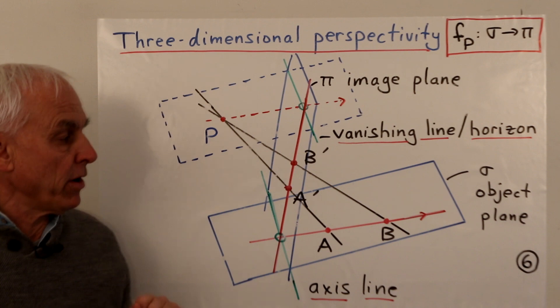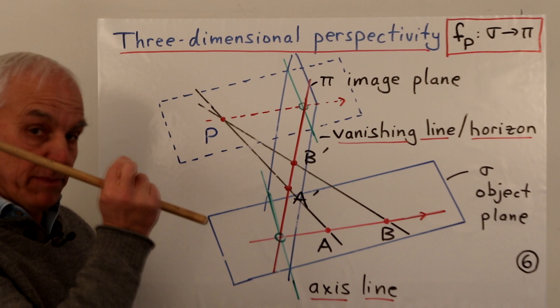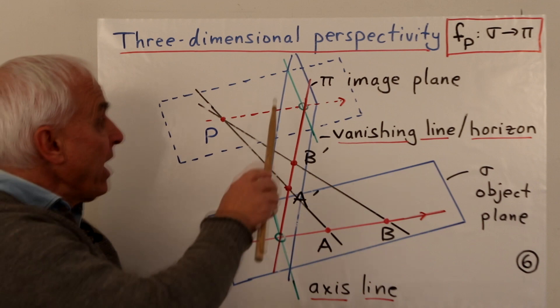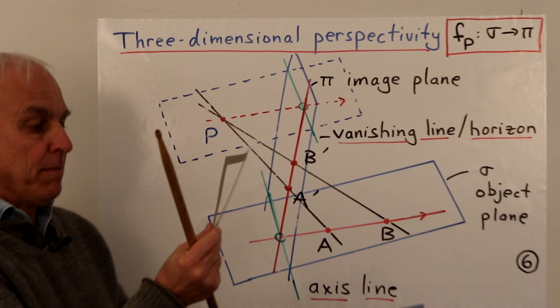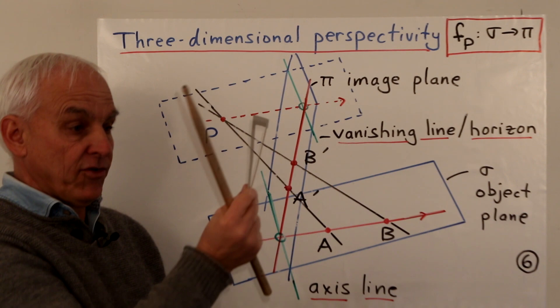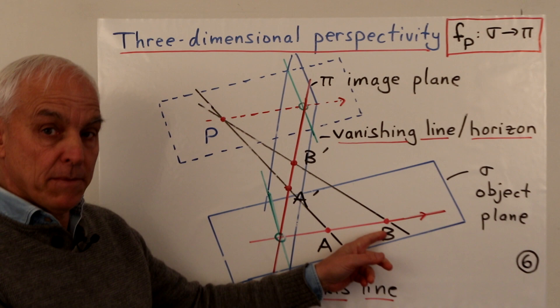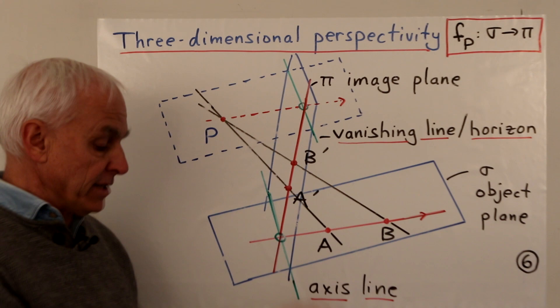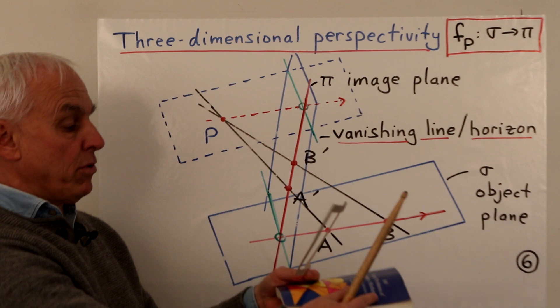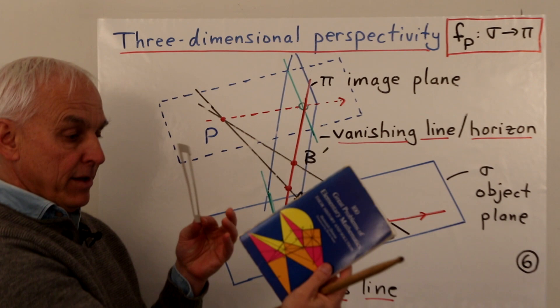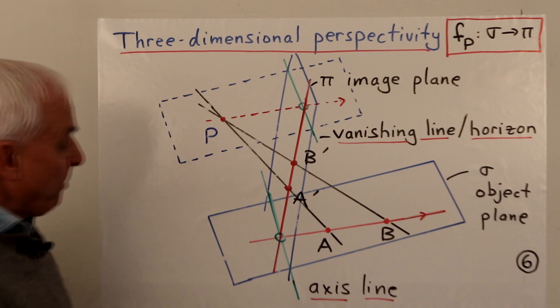Now we come to what we're really interested in: three-dimensional perspectivities. We have a point P in three-dimensional space — perhaps the eye. We have an object plane consisting of something we're interested in, and we have an image plane — the painter's easel. I connect points A and B on the object plane with P, creating lines, and then see where those lines meet the image plane. That's how I draw the object in the image plane. So A' and B' are the corresponding image points.